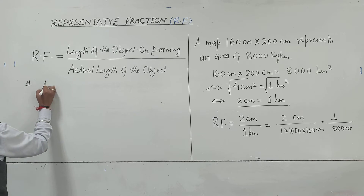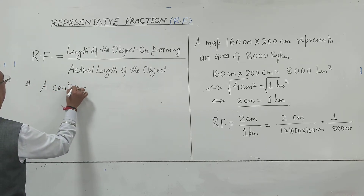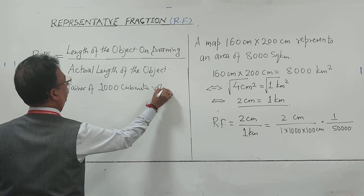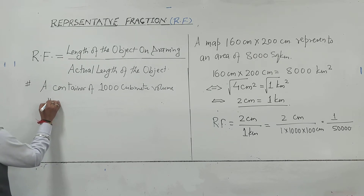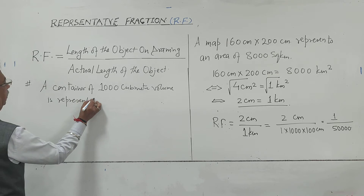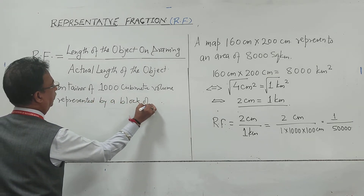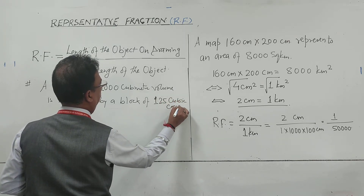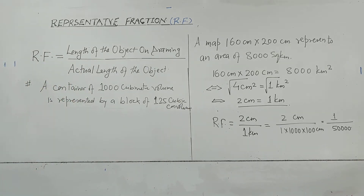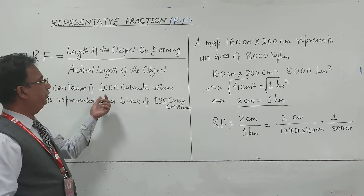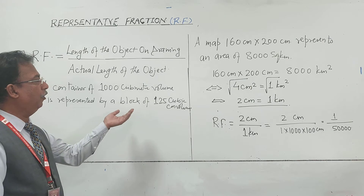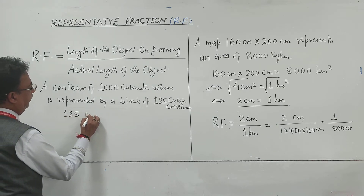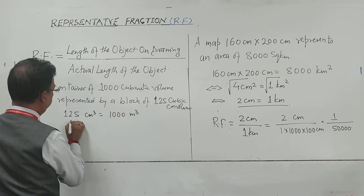Suppose the proportion is given like this: a container of 1000 cubic meter volume is represented by a block of 125 cubic centimeter. So in actual there will be a container of 1000 cubic meter volume, and it is represented by a block of 125 cubic centimeter. So 125 centimeter cube equals 1000 meter cube. This proportion is in the form of a cube.